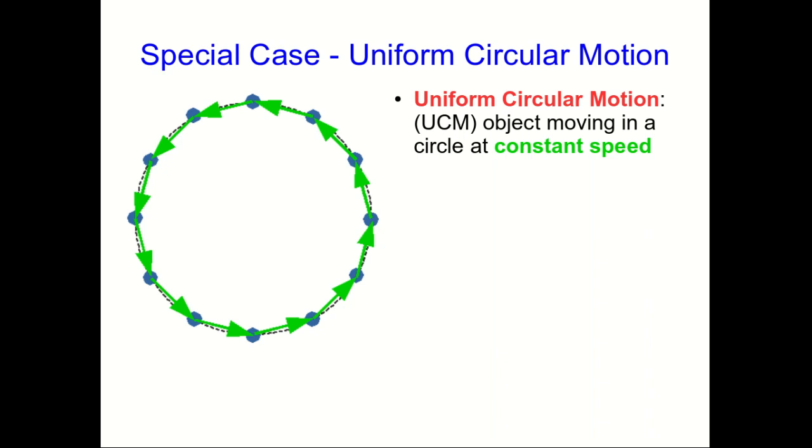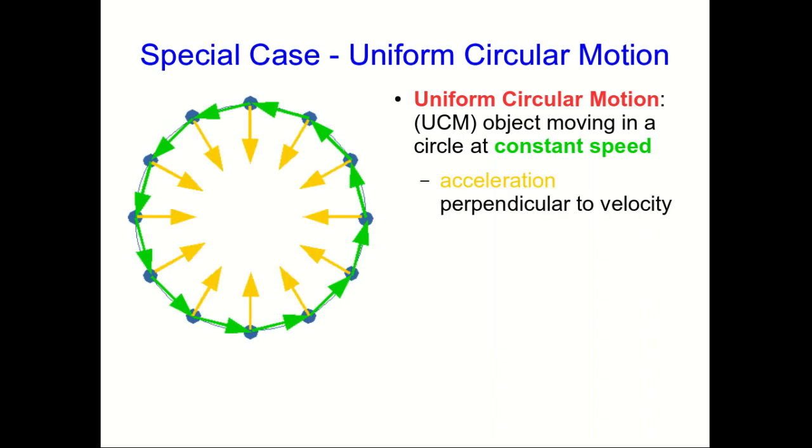Well, we already know from earlier in the lecture that when an object goes around a corner at constant speed, the acceleration vector points perpendicular to the velocity, when the velocity, remember, is pointing tangent to the trajectory. In the case of a circle, that means that the acceleration points directly to the center of the circle.